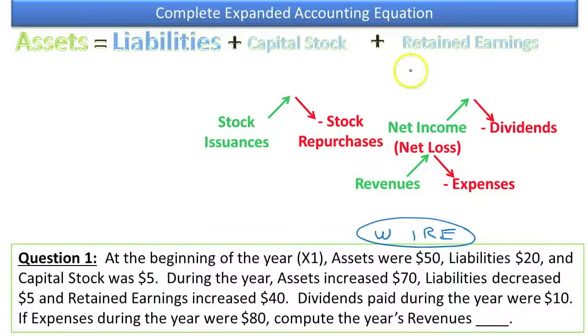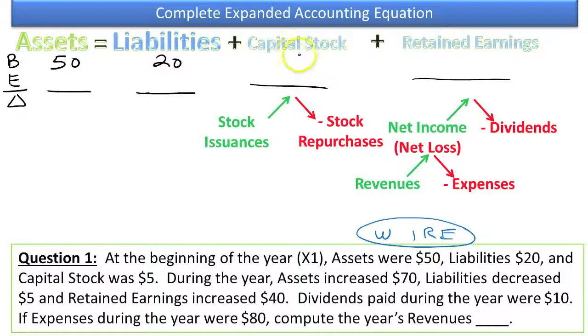In this problem, as you can see, this information about the changes in the accounts I've moved down a little bit so we can use the format above more efficiently. We'll have the beginning and ending in these accounts, and then the changes will branch off from there. Here's our assets, liabilities, capital stock, retained earnings. Assets were $50 at the beginning of the year, Liabilities were $20, and Capital Stock was $5.